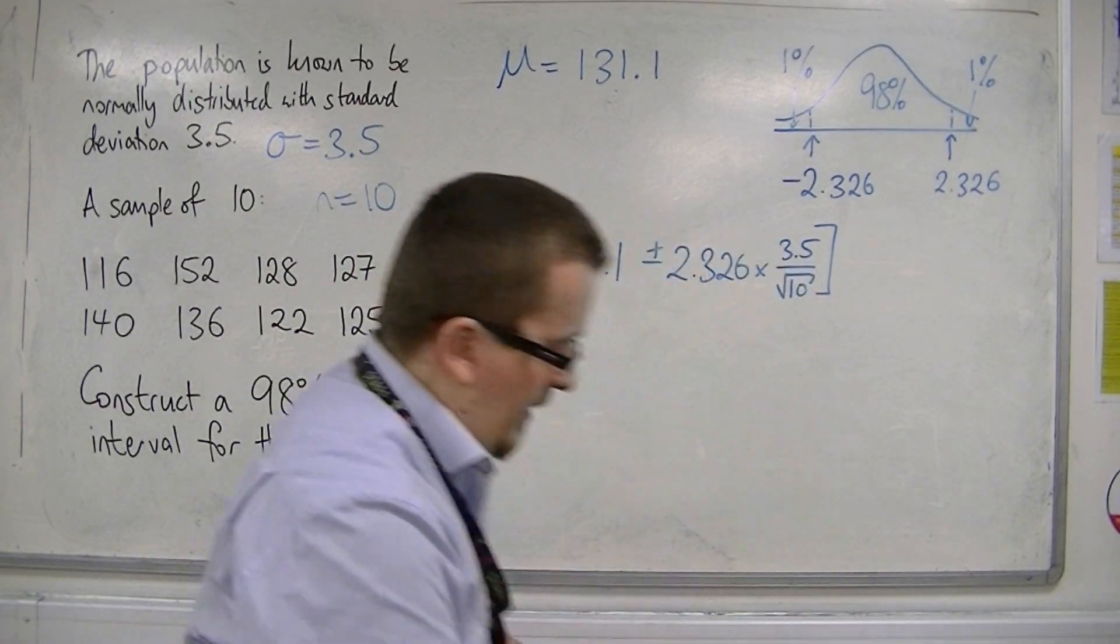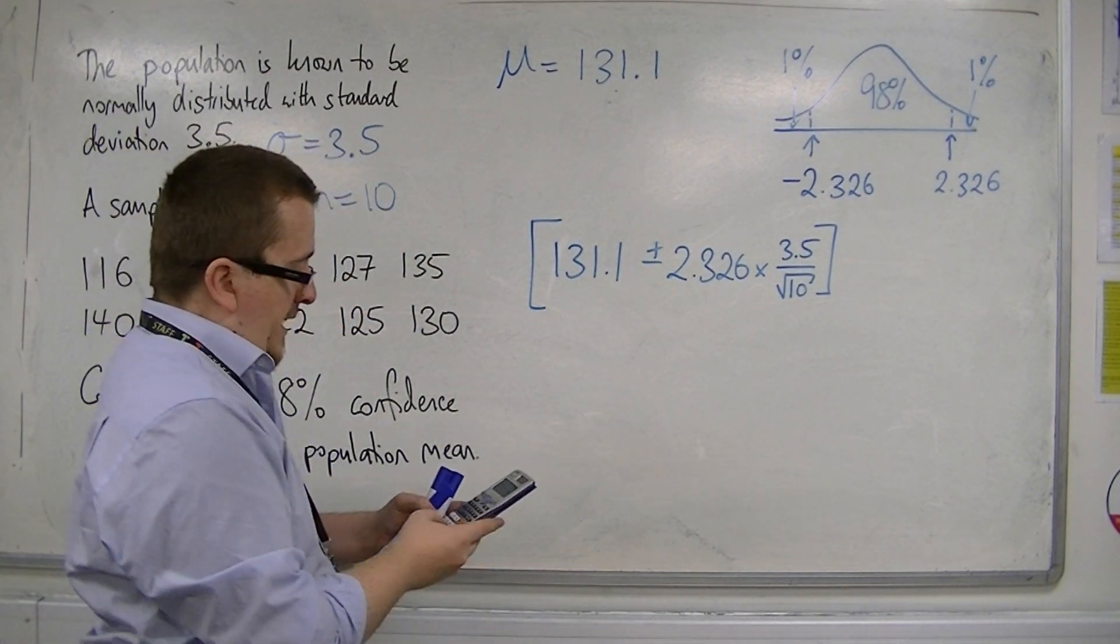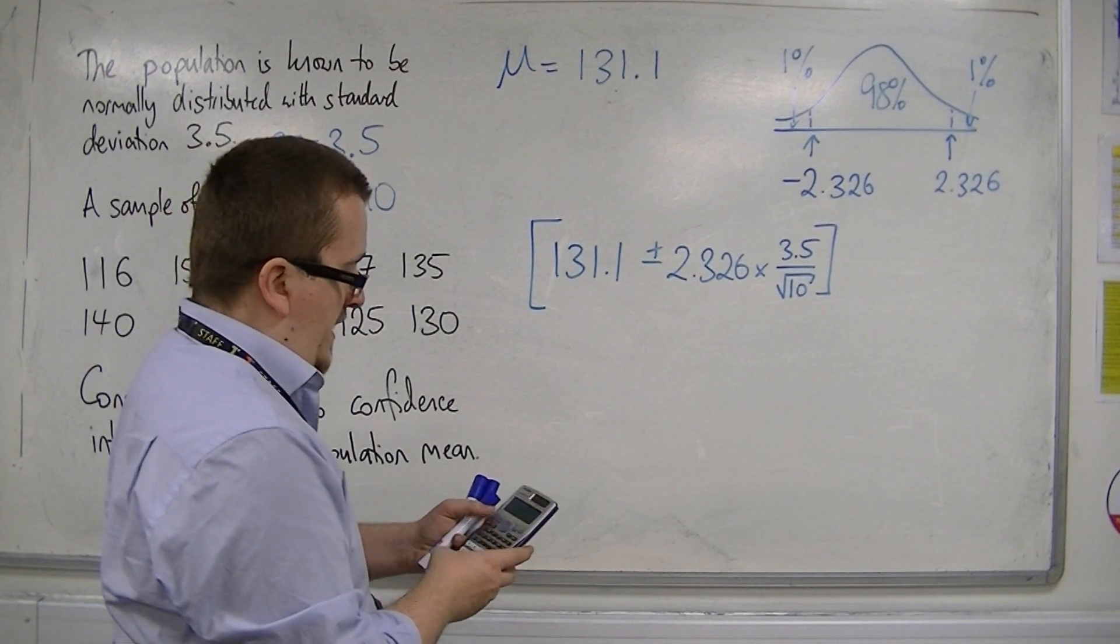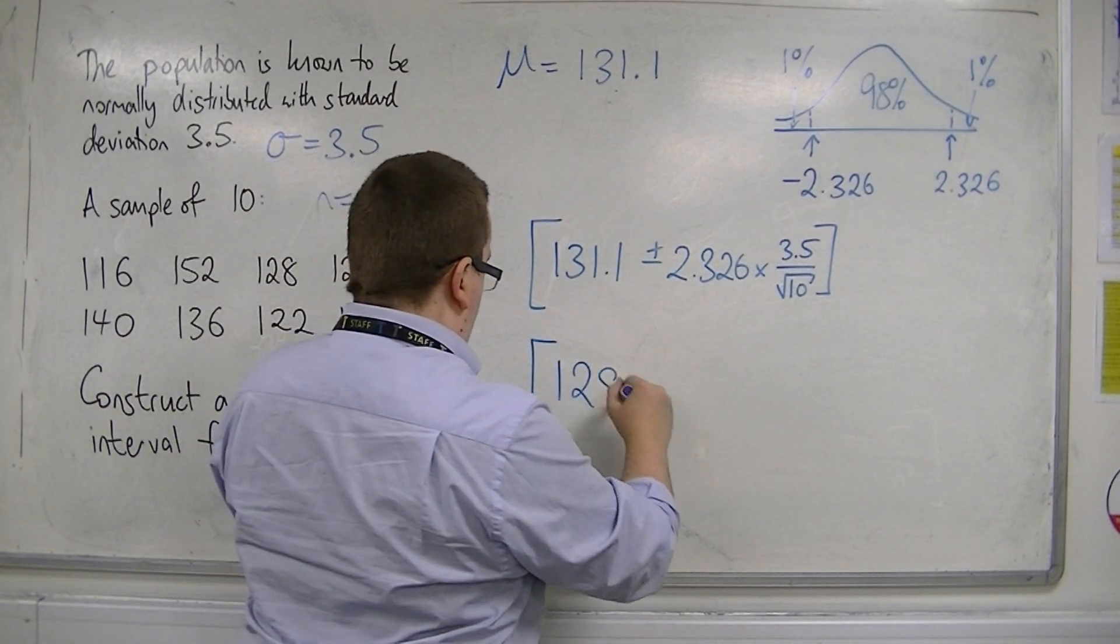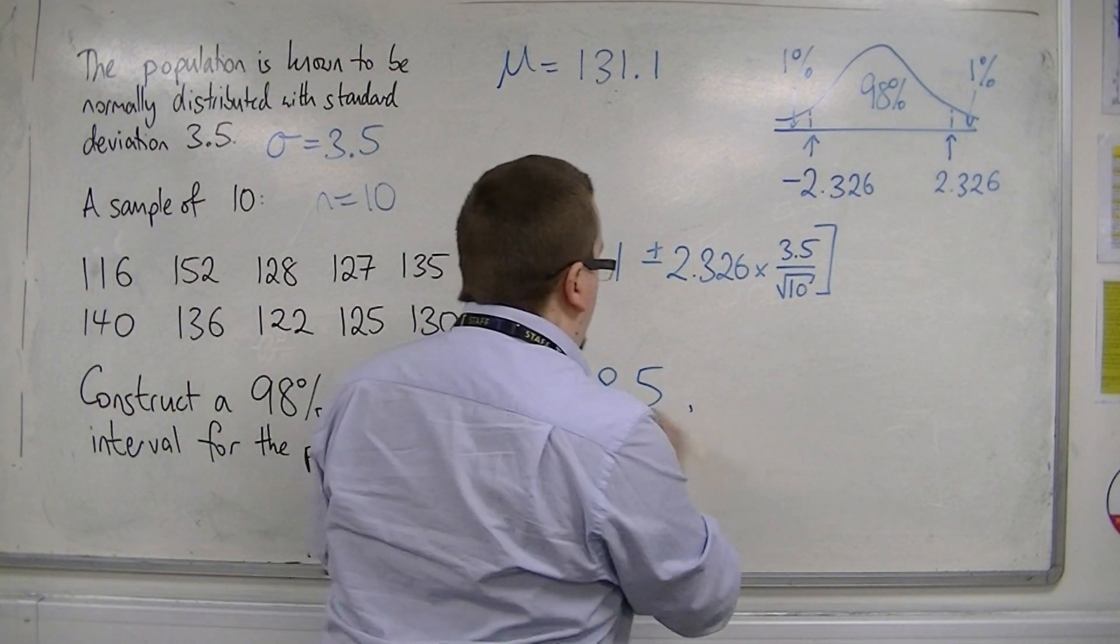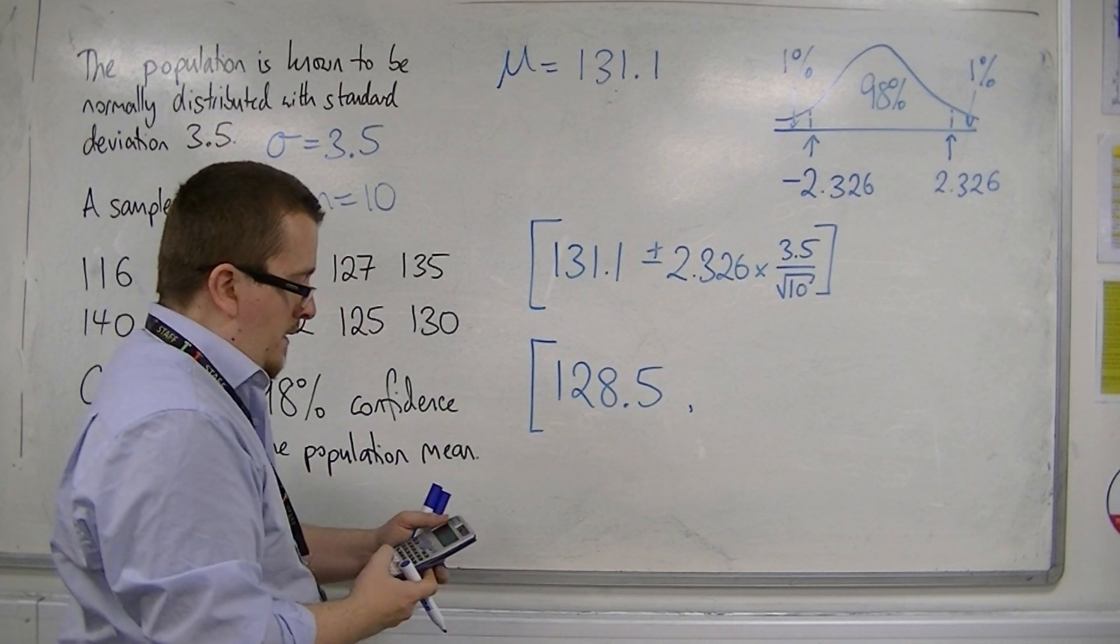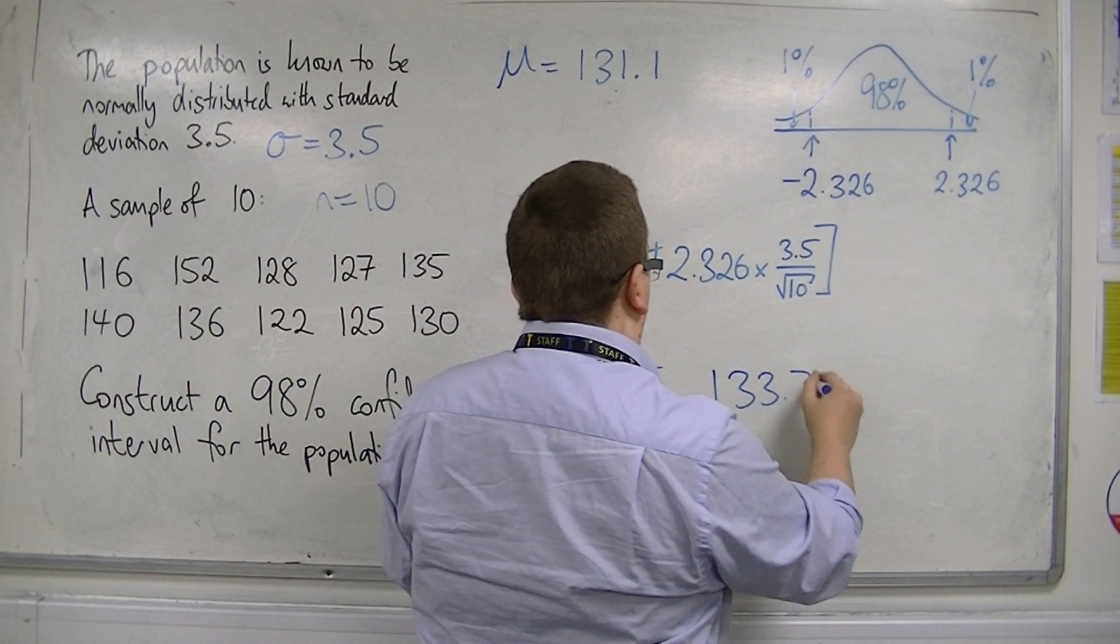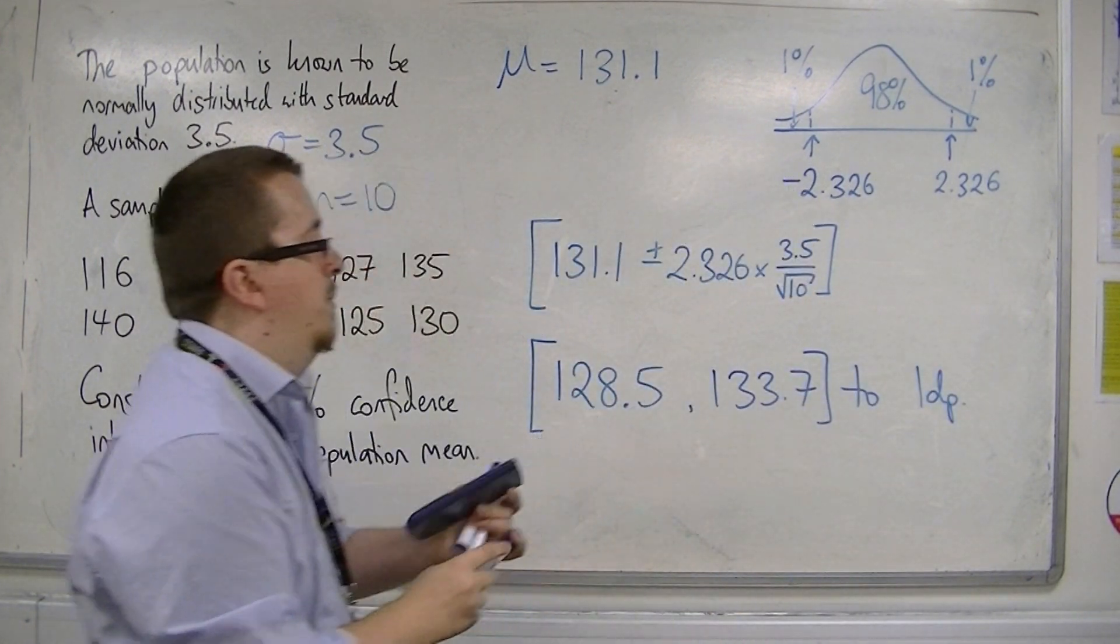So, we're going to have 131.1, take away 2.326, times by 3.5, divide by root 10. So, we get 128.5 to one decimal place. And then, if I add instead, we're going to get 133.7 to one decimal place.